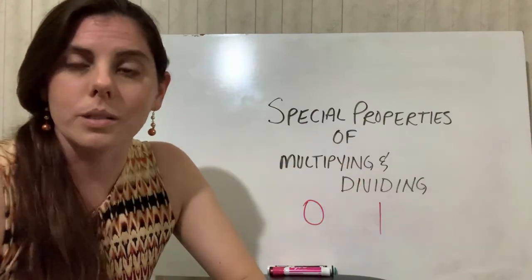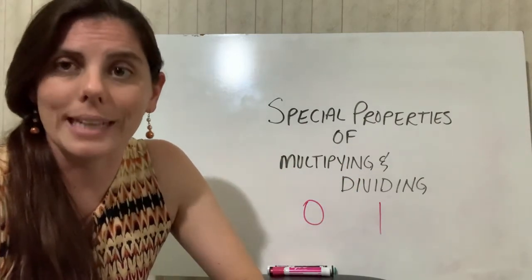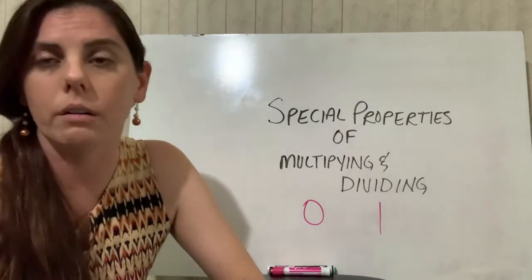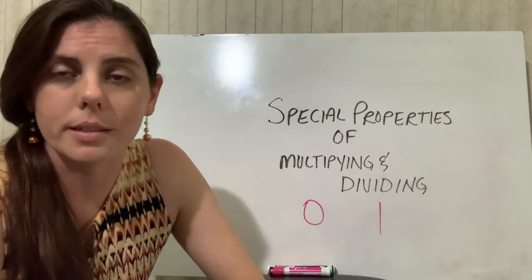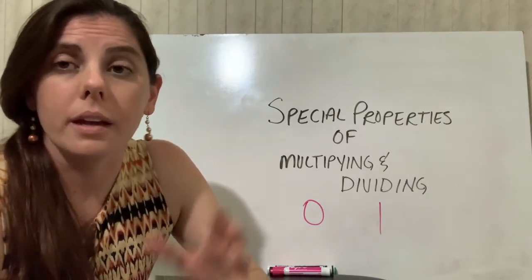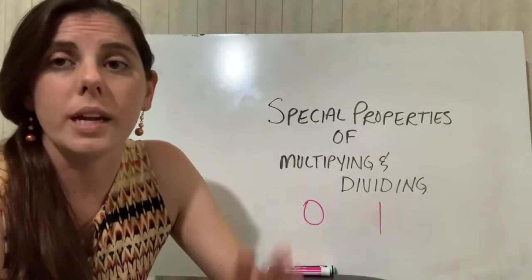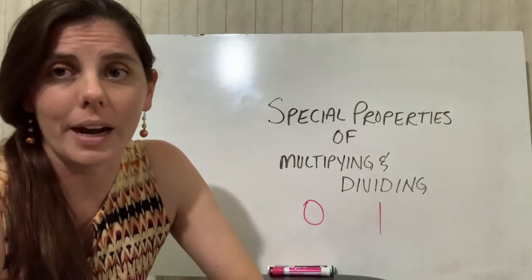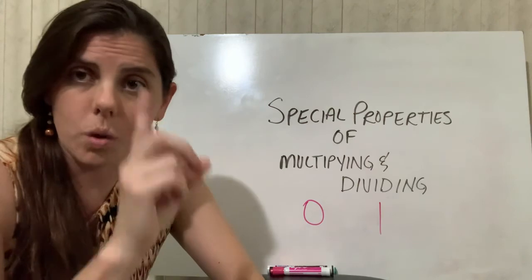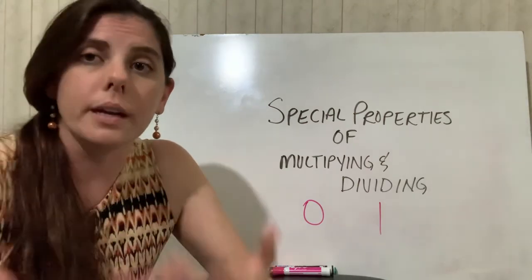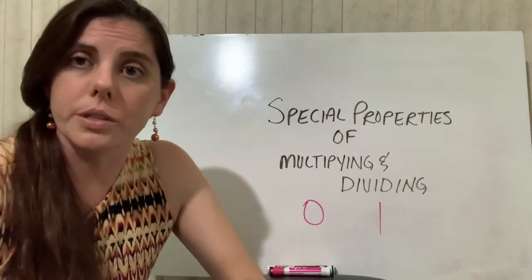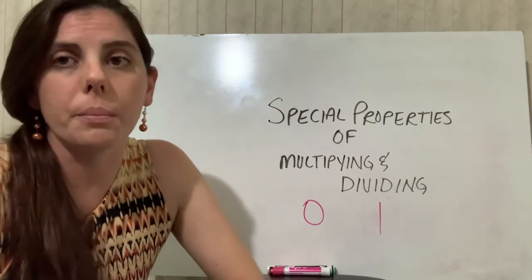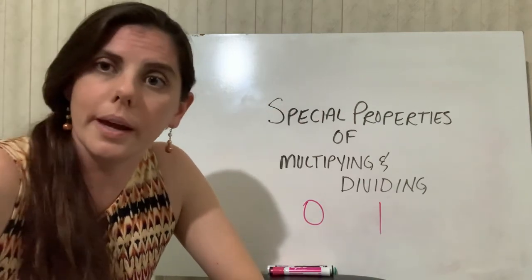So the number 1 is also a special property. It's called the identity property, and we'll hear that later on in our math classes. But it's a special property in that if we multiply or divide anything by the number 1, the answer will be itself or the number that we started off with. So those are just a couple things to keep in mind when multiplying and dividing.